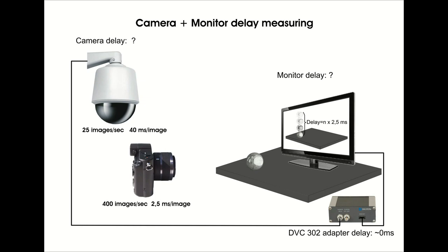Let's measure first the delay of the speed dome camera. The method of the measurement is the following: we make a recording about a top ball with the photo camera's 400 frames per second operation mode. The moment when the ball lands on the table will occur on the screen later than in reality. We consider that the reality is the ball's direct image on the photo camera. The delay measurement is done by a video editor program which counts how many frames the photo camera records until the ball reaches the table on the monitor too. We can get the delay by multiplying the number of the frames by two and a half milliseconds.